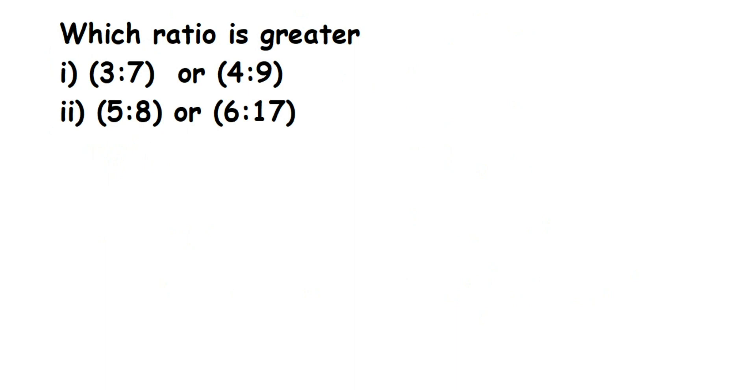Now this type of question, there are many ways of solving it. I'm going to explain the easiest way for both questions. For the first one we have 3 is to 7 and the next ratio here is 4 is to 9. I'm going to write it down in fraction form, so this will be 3 by 7 and this will be 4 by 9.